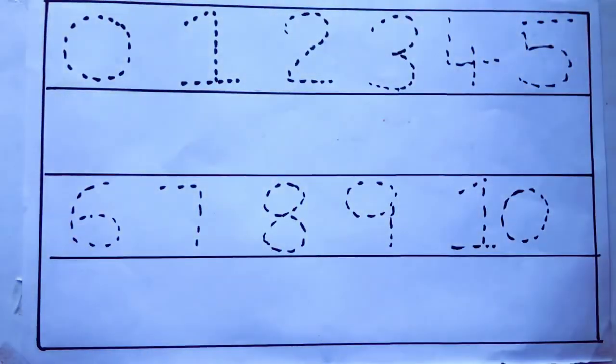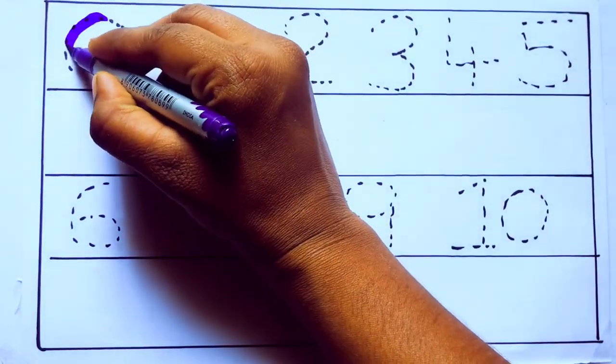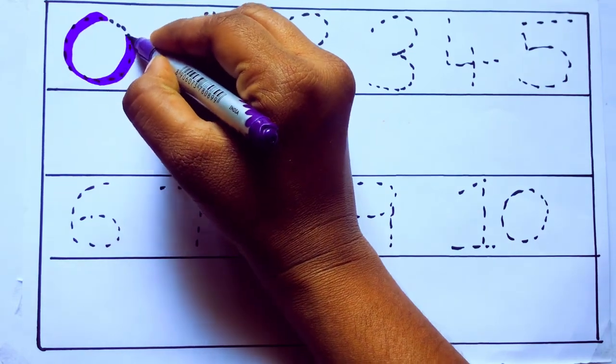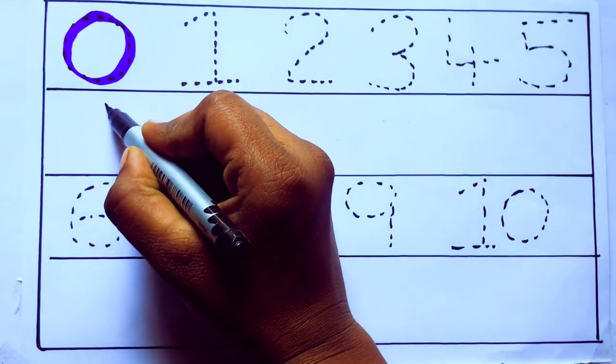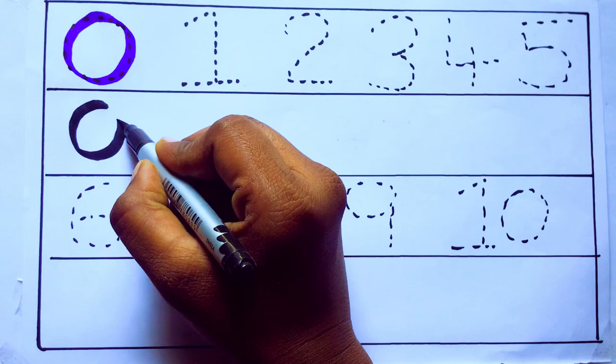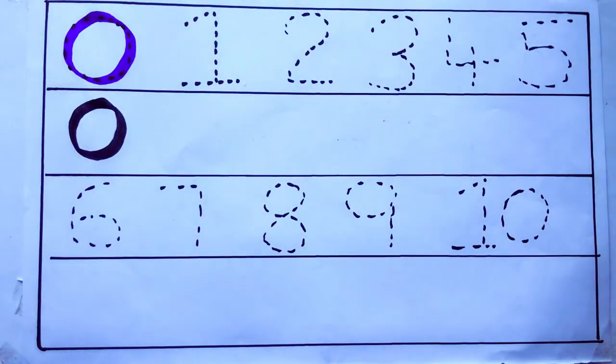Let's draw numbers. Violet color 0, Z-E-R-O. Blue color 0.